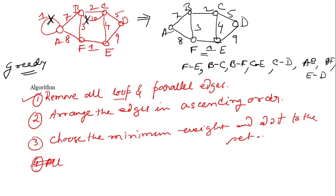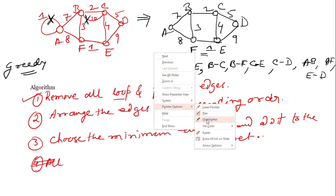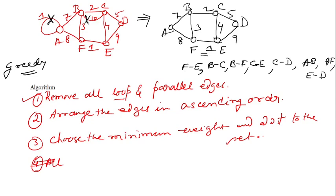Now slowly apply the algorithm. First, take FE - no cycle is created, so include it. Then take BC - include it. Then take BF - no cycle is created, include it. Next is CE - but if you take CE, it will form a cycle with FE, EC, and BC creating a square-shaped cycle. So CE cannot be taken.